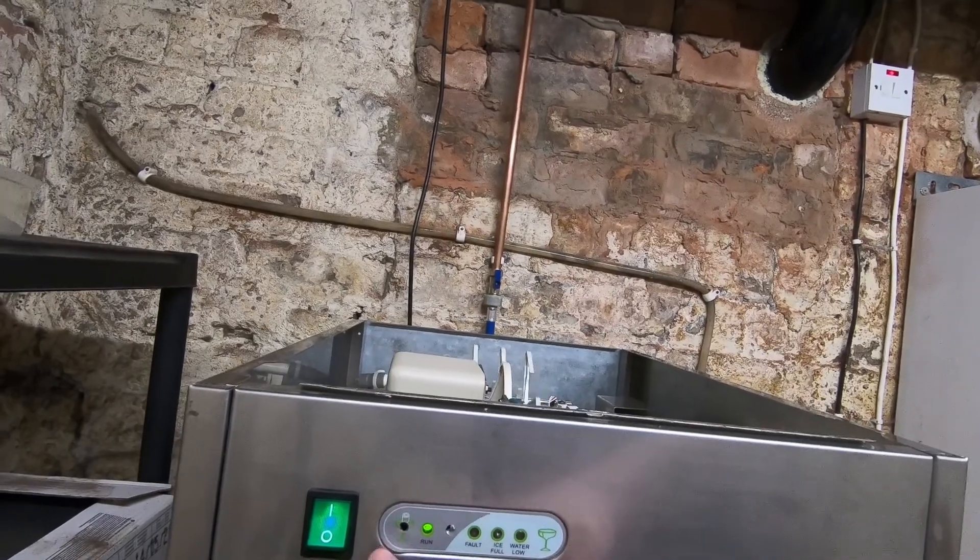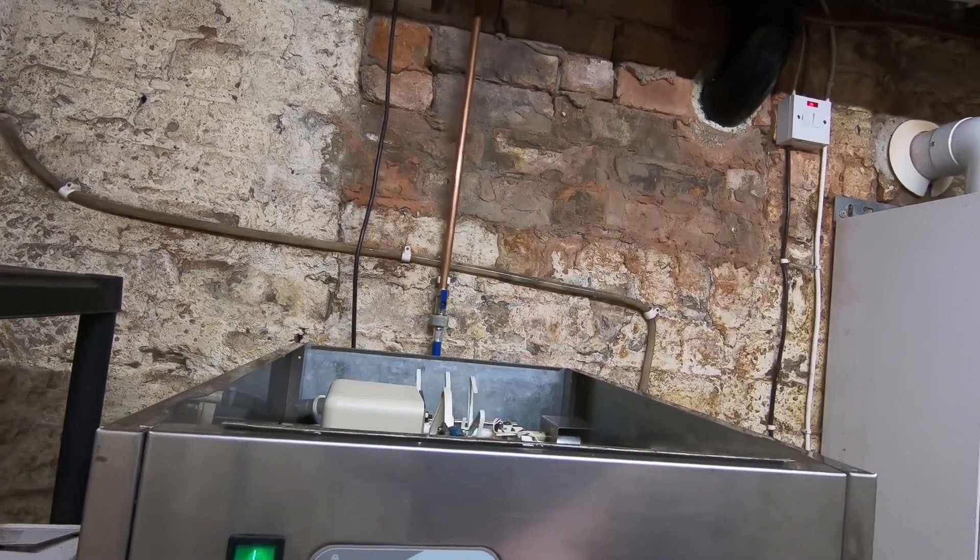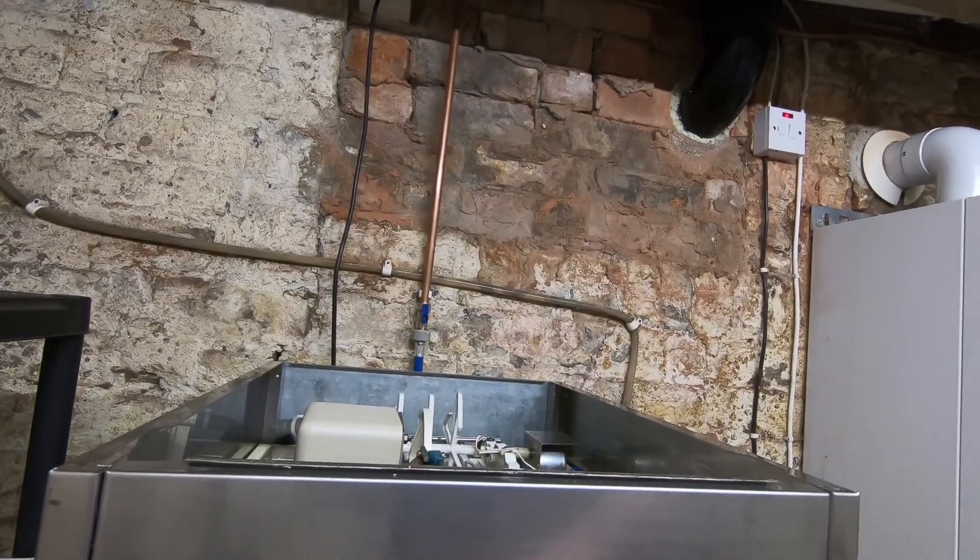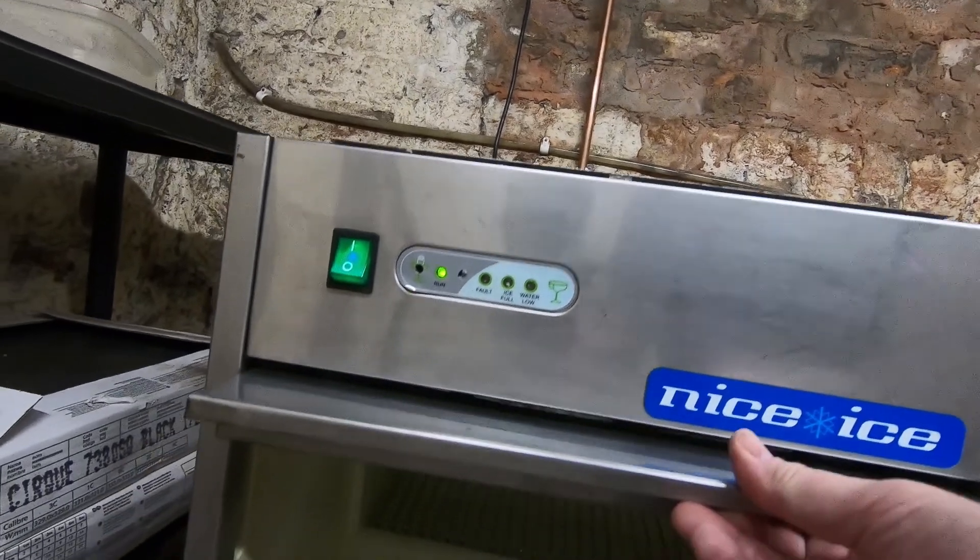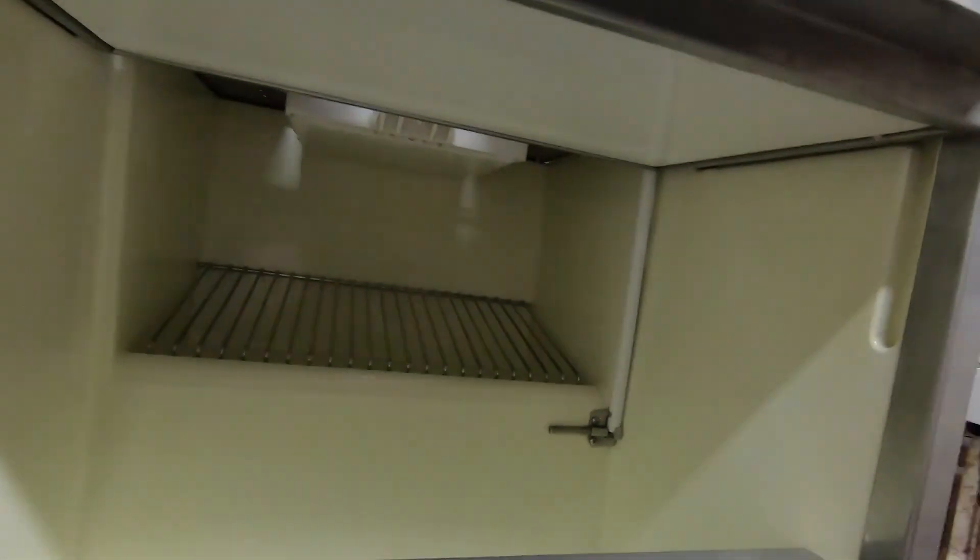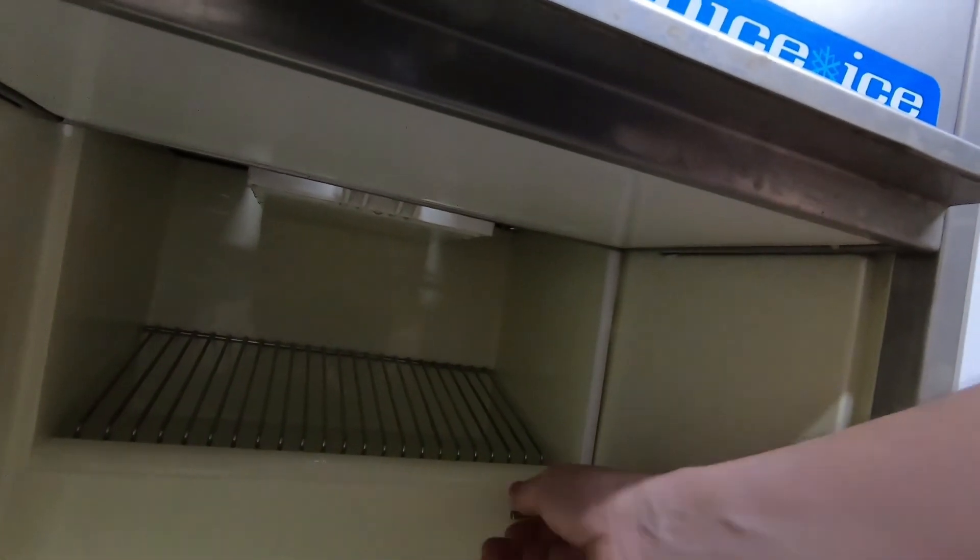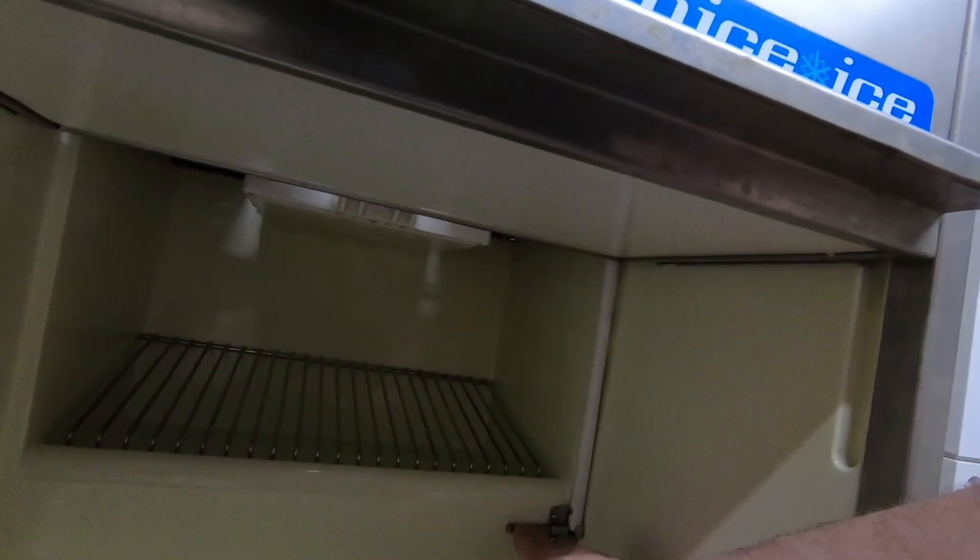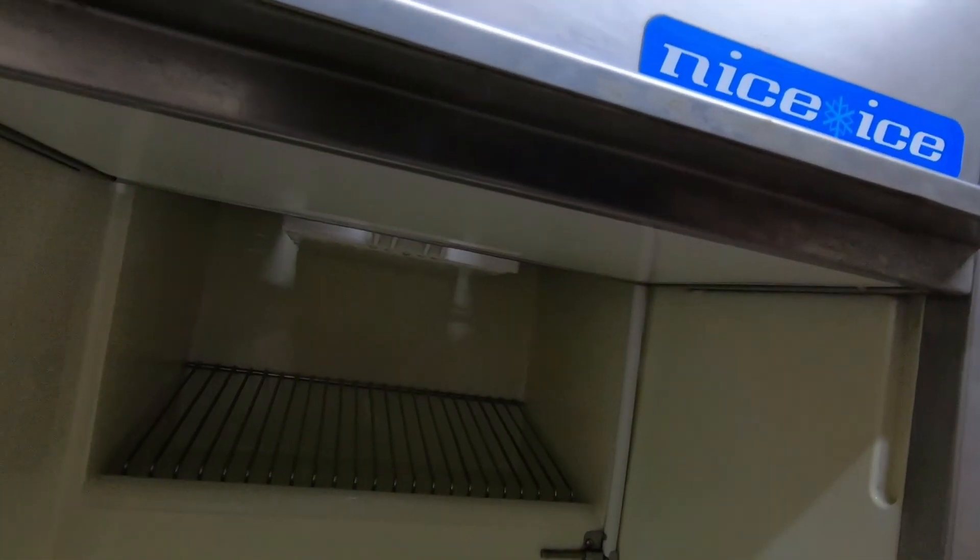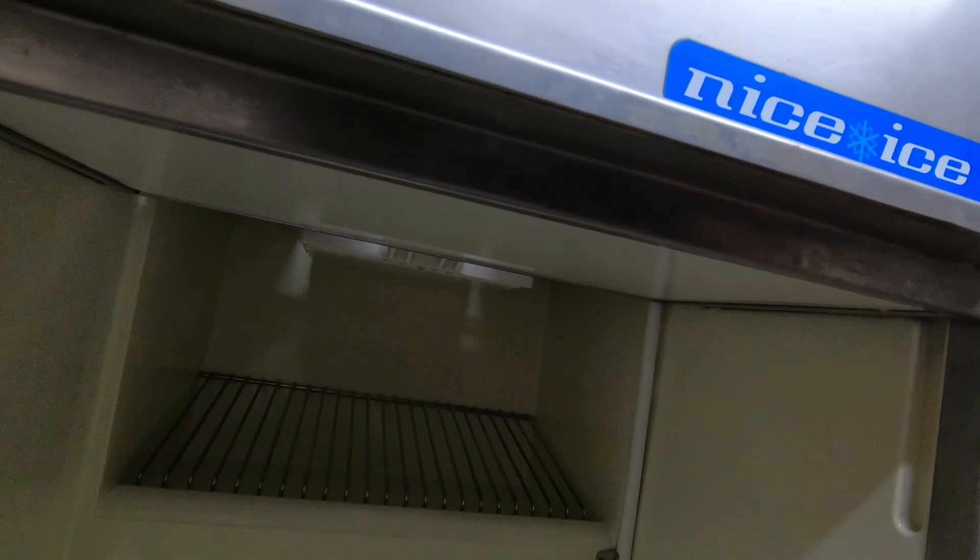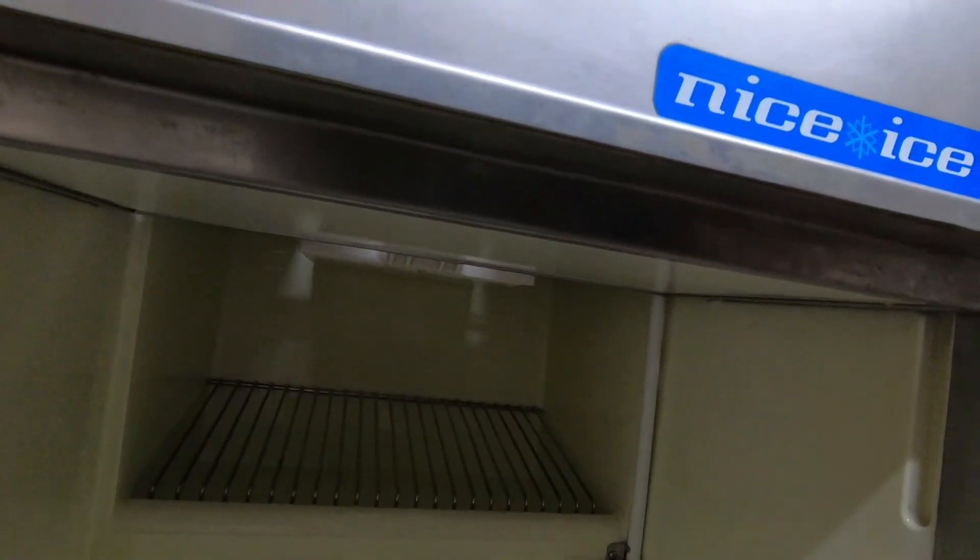A few controls on the front here. There's obviously the run indicator, there's a fault, ice full. So that inside here in the bin, there's a sensor here, which when the ice gets up to that, I guess this is a temperature indicator, it will know that this bin is full of ice and it stops the production of ice. As soon as you take some ice out and it lowers down, it will automatically start back up again.